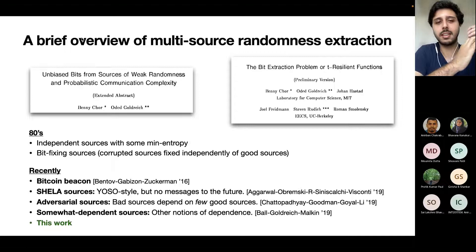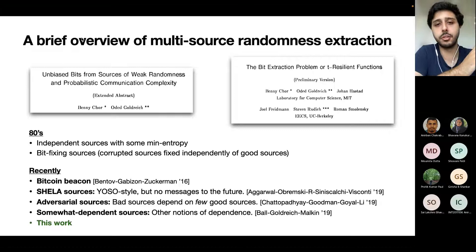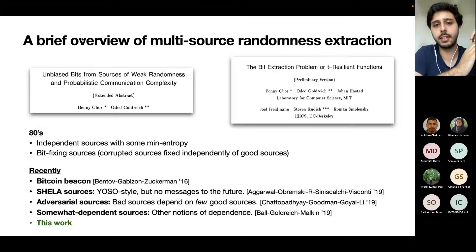More recently, people have started studying multi-source extraction in settings where the sources have many dependencies between themselves, which is a really interesting problem. There is previous work studying a version of this model but where there are no messages to the future. It turns out that having messages to the future is actually really important — without them, we cannot extract uniform randomness and must settle for something less powerful.